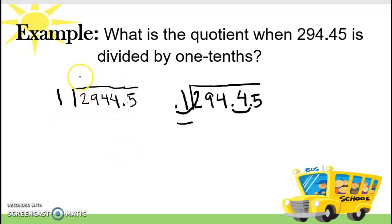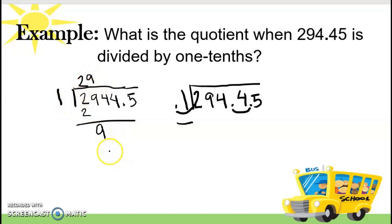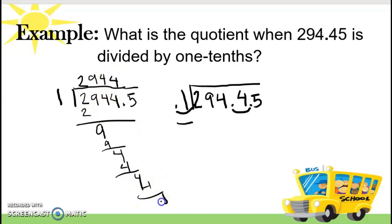So divide na natin. So 2 divided by 1 is 2. 2 times 1 is 2, so 0. Bring down 9. 9 divided by 1 is 9. 9 times 1 is 9. Then bring down 4 — this is also 4, then another 4. Then 5, then 5. Then 0. So saan ang decimal point natin? Ilalagay niyo lang siya directly sa tapat. So your answer is 2,944 and 5 tenths.